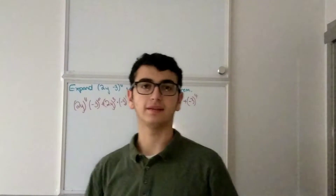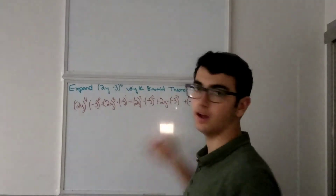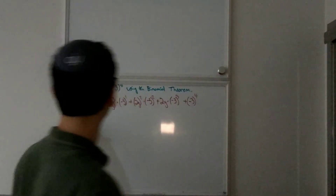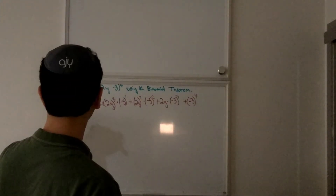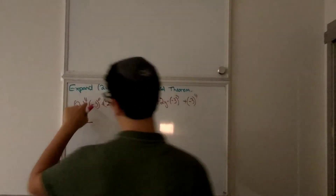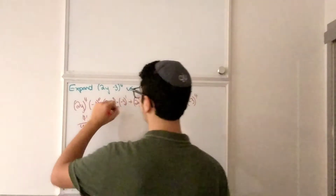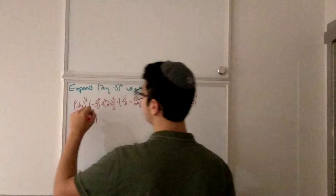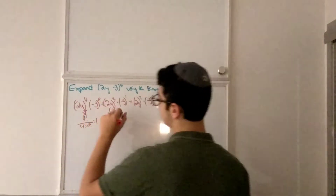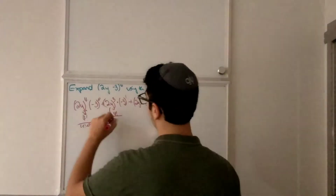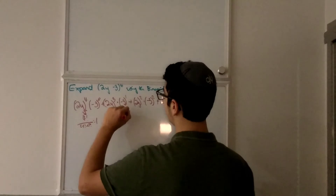Now I have that down, and what I'm going to want to do is find the coefficients that go with each of these terms. For (2y)^4 times (-3)^0, it's going to be 4 factorial divided by 4 factorial times 0 factorial, which equals 1. So this term has an additional coefficient of 1. The next one is 4 factorial over 3 factorial times 1 factorial, which equals 4.